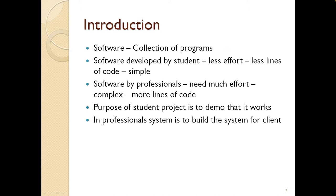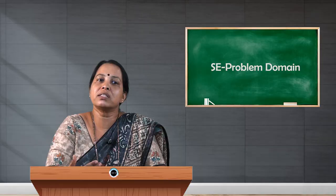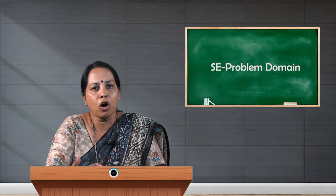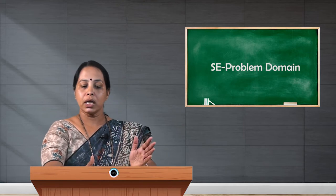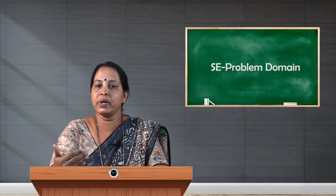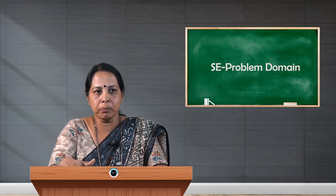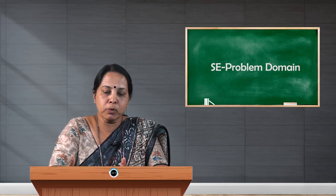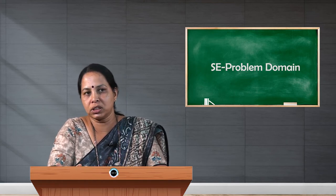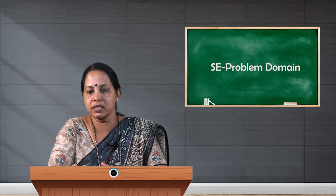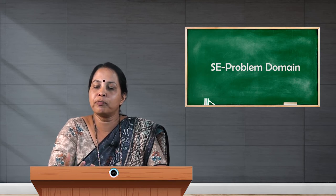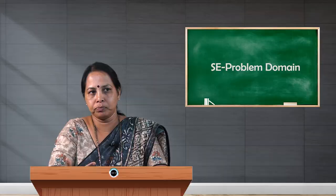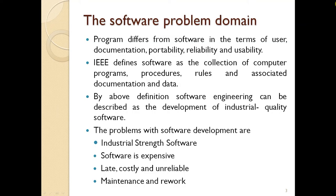The purpose of a student project is just to demo that work or mainly for learning purposes, whereas in professional systems it is to build the system for the client and it has to fulfill all the needs of the client. When a company develops software, the software development has some basic problems — student projects are completely different from professional projects. A program differs from software in terms of user documentation, portability, reliability, and usability.